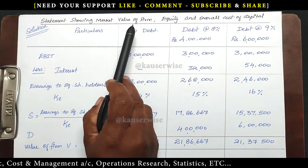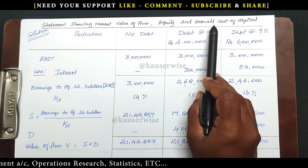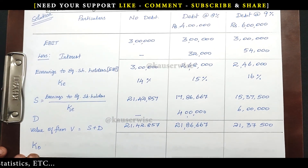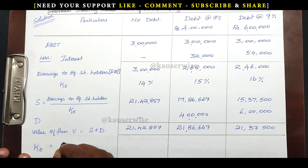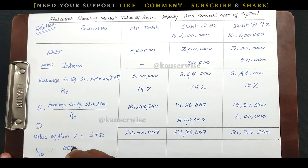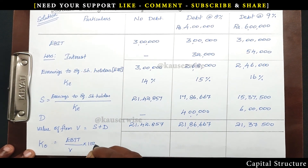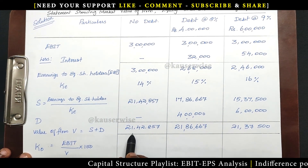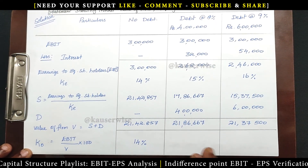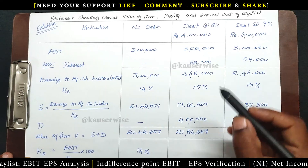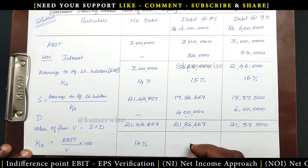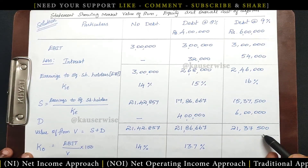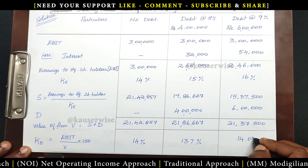Now we move on to the last calculation: overall cost of capital. The formula for KO, overall cost of capital, is: EBIT divided by value of the firm, multiplied by 100. For the first option: 3 lakhs divided by the firm value, into 100 — gives 14%. For the second option: 3 lakhs divided by the total firm value, into 100 — gives 13.7%. For the third option: EBIT divided by market value of the firm, into 100 — gives 14.04%.